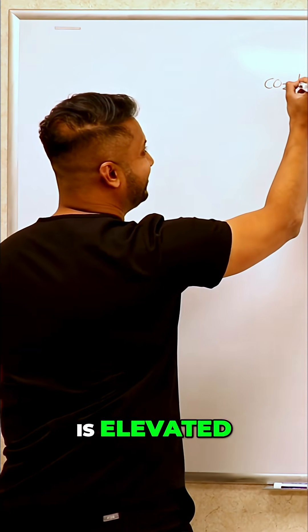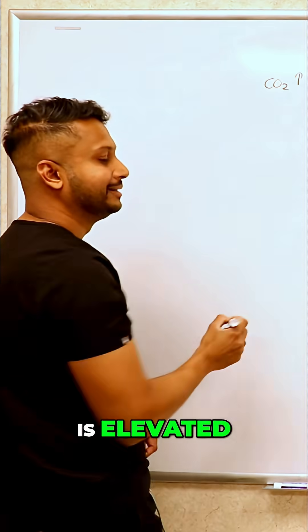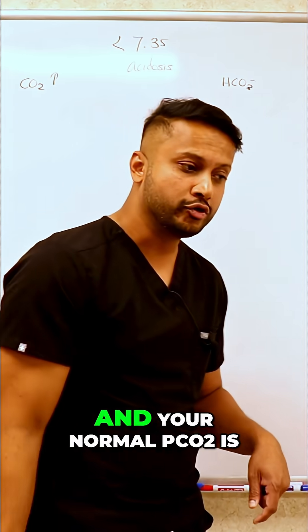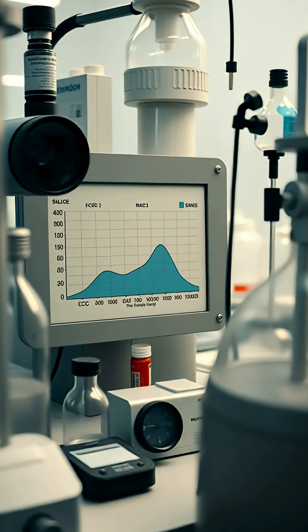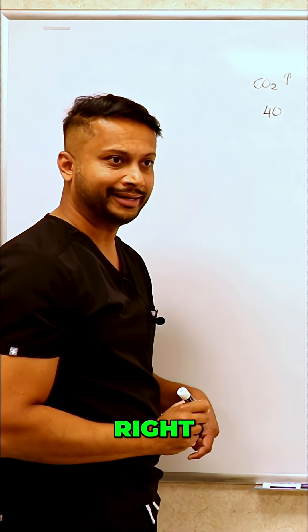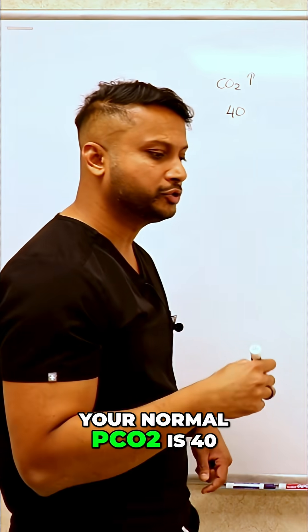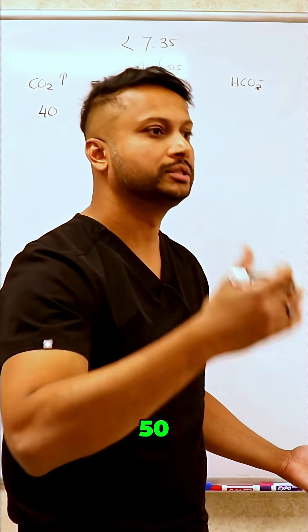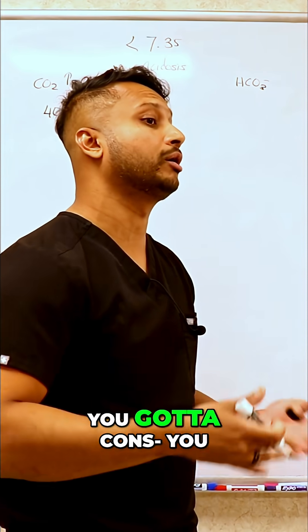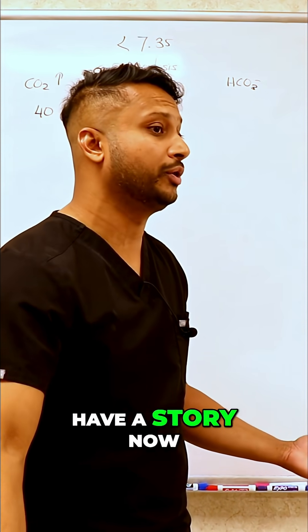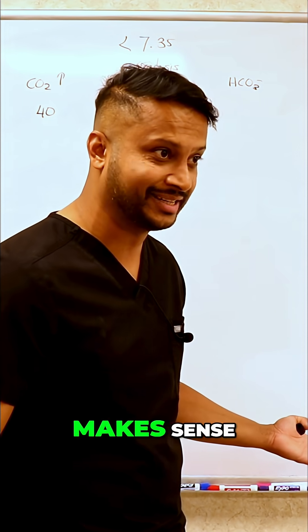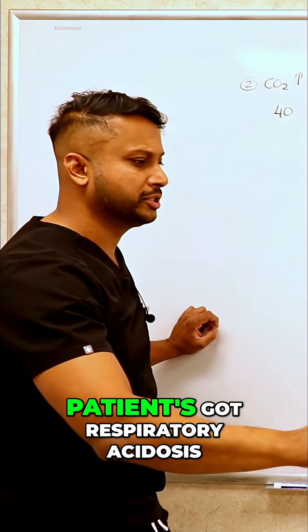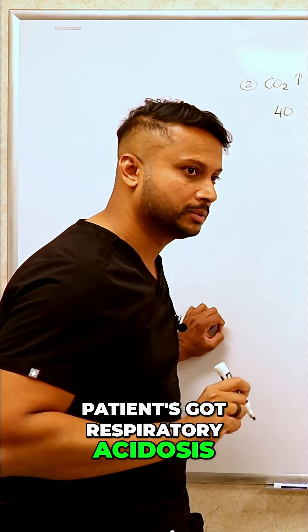If your patient's CO2 is elevated, that tells you the patient has got respiratory acidosis. Your normal PCO2 is 40. So if your PCO2 is elevated — 50, 60, 70, 80 — you now have a story of respiratory acidosis. The moment you have an elevated CO2, you tell yourself the patient has got respiratory acidosis.